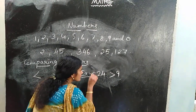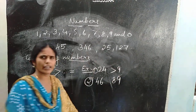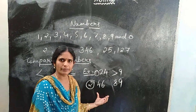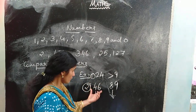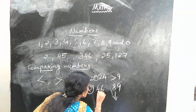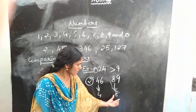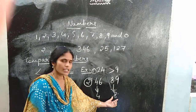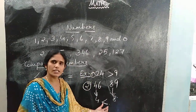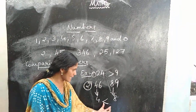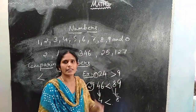Another example: 46 and 89. Here both are 2-digit numbers. So first we look at the first digits — 4 and 8. Which digit is greater? 8 is greater than 4. So here 46 is less than 89.